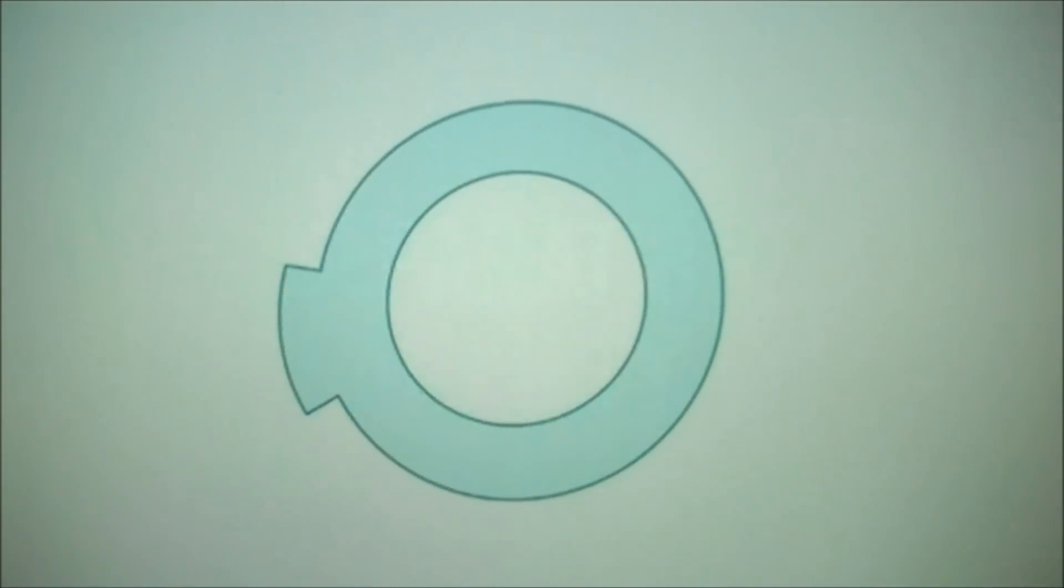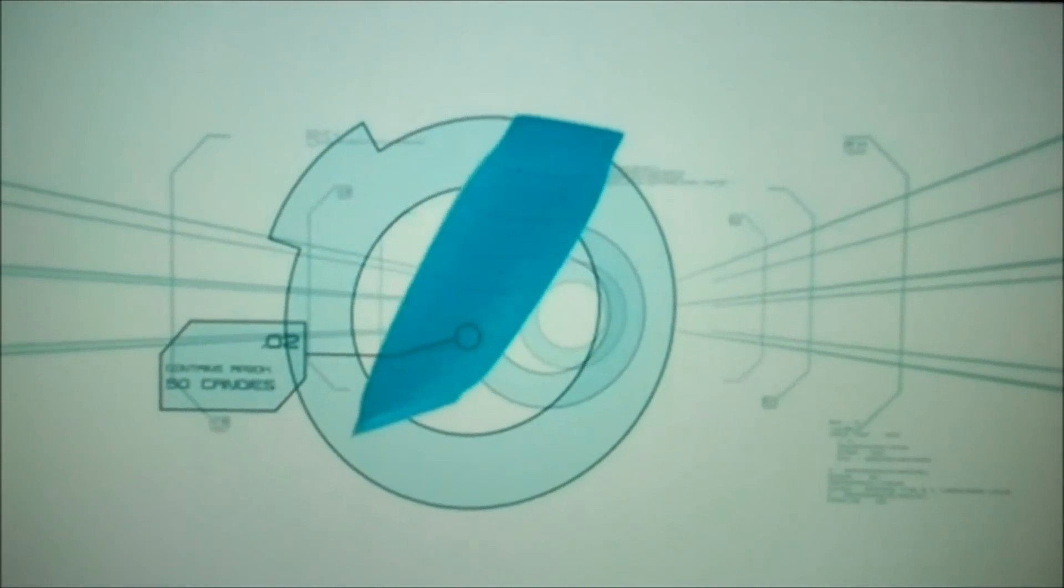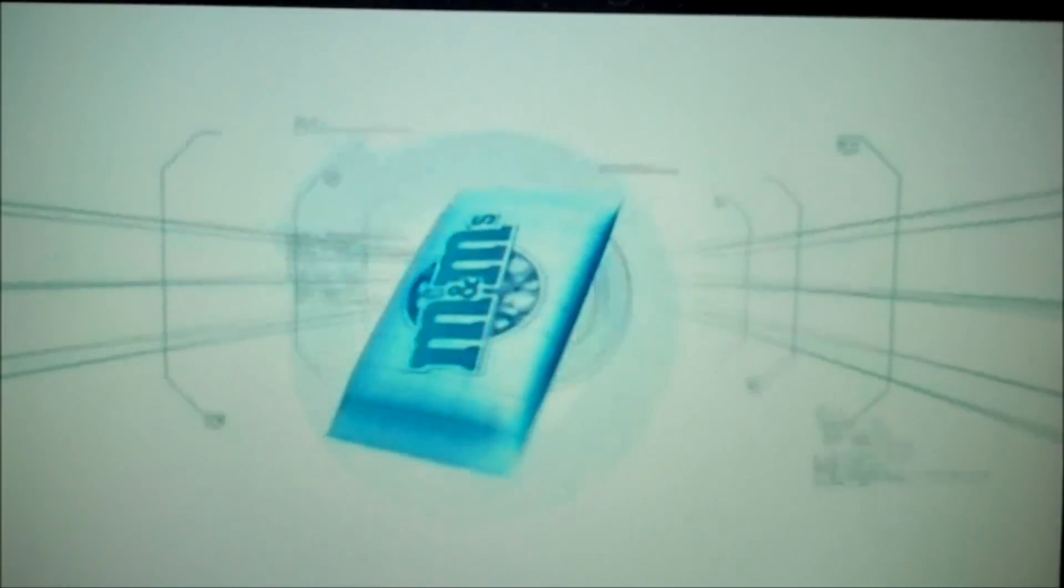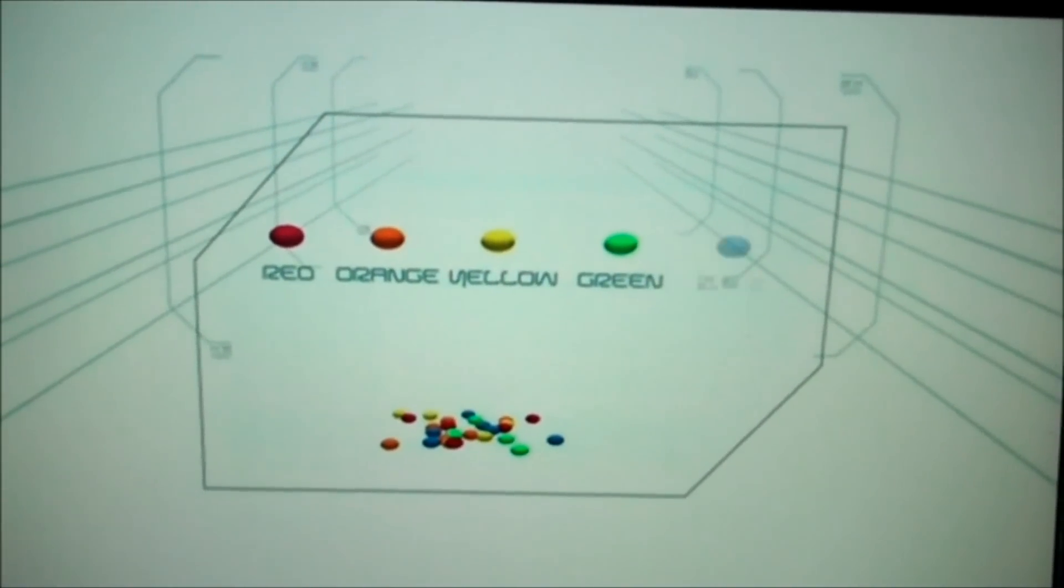Separation Anxiety. A standard pack of M&Ms contains approximately 50 individual candies. They come in a variety of colors including red, orange, yellow, green, and my favorite, blue.